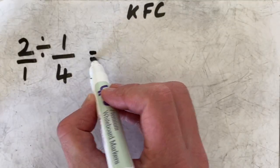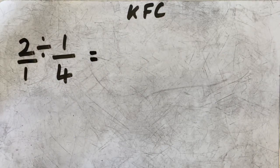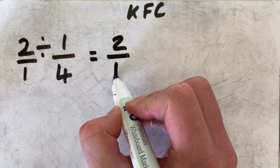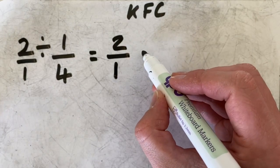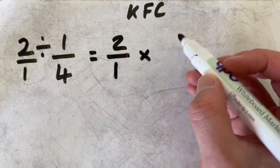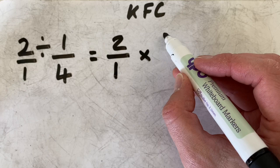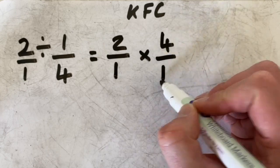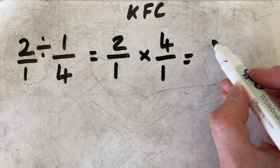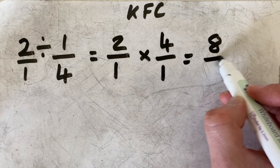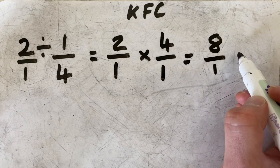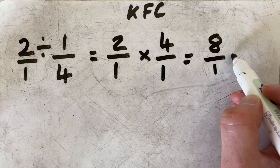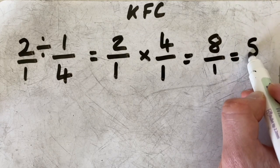So now we can complete this problem using the KFC method. Keep the first one, change the symbol, flip the second one. Now we are left with two times four, eight. And then one times one is one. Obviously, a denominator of one just means this number is eight.